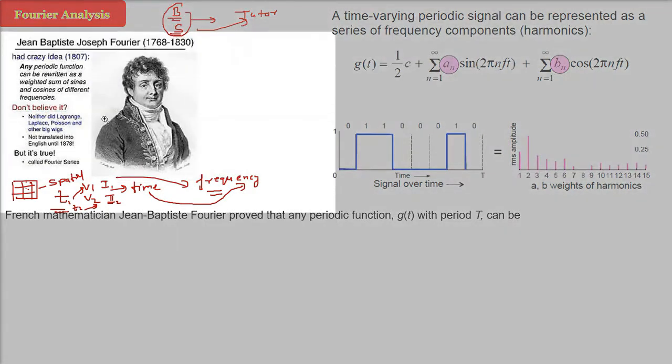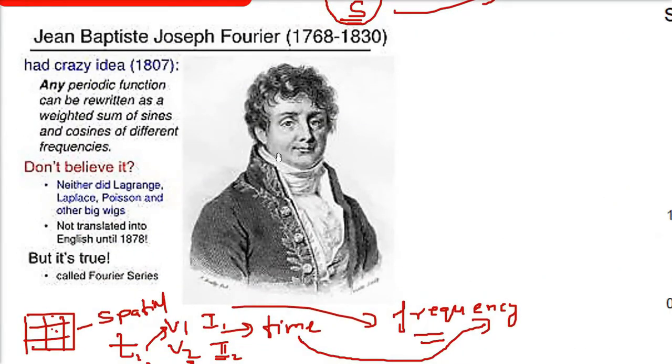Before I go ahead, let me tell you about this gentleman. He is Jean-Baptiste Joseph Fourier. As I said, the last R is not spoken, from 1768 to 1830. Now he gave a very crazy idea. Why it was called a crazy idea? Because he said any periodic function can be rewritten as a weighted sum of sine term and cosine term.